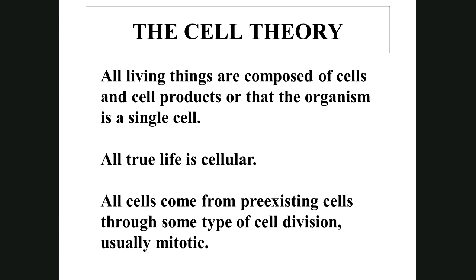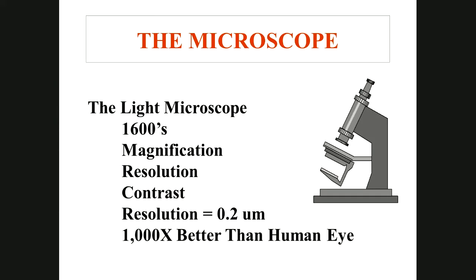Light microscopes were built around the 1600s. Microscopes have key properties: magnification — the ability to enlarge objects — and resolution, the ability of the lens system to reveal fine detail and show objects as separate and distinct, sharpening the image.